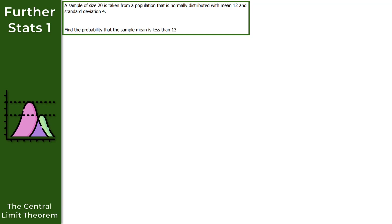Let's start off with question 1. We have a sample of size 20 taken from a population that is normally distributed with mean 12 and standard deviation 4. The question asks us to find the probability that the sample mean is less than 13. To start with, let's choose a random variable to model this normal distribution. So if I choose x as my random variable, then x follows a normal distribution with a mean of 12 and a variance of 4 squared.